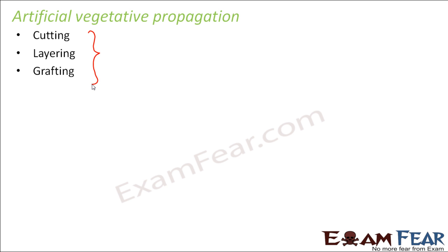They want to produce more red rose plants because maybe red roses are more beneficial or they earn more profit by selling them. So they use this method of artificial vegetative propagation to increase production. To some extent it helps them, and to some extent they sometimes exploit this entire process.